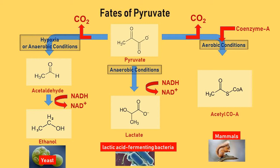Glycolysis is an oxygen-independent metabolic pathway and occurs in the cytosol. However, in eukaryotic cells, the citric acid cycle occurs in the matrix of mitochondria.